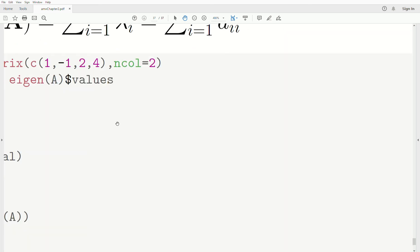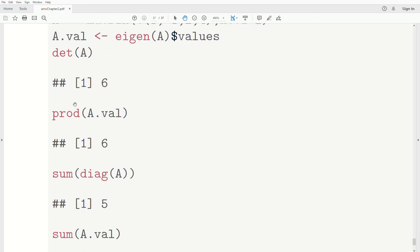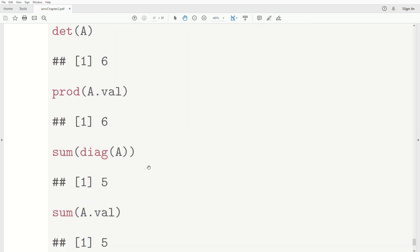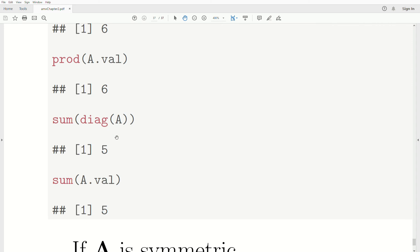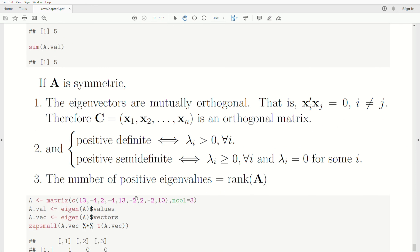If we were to do that in R, we have a matrix A. We grab the eigenvalues, and then we take the determinant of A is 6, the product of the eigenvalues is 6. The trace of A is 5 and the sum of the eigenvalues is 5. So it does hold, at least for that case.